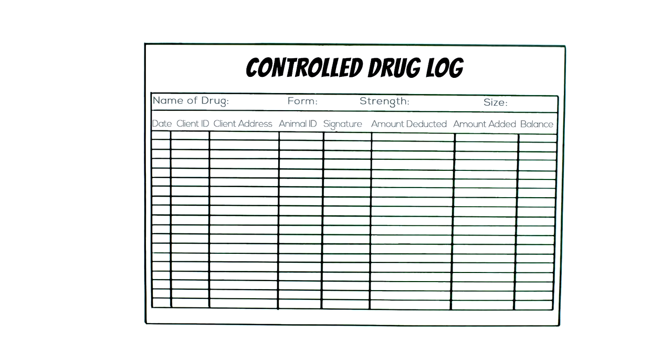Under Regulation 1093, all veterinary facilities must maintain a controlled substances register, commonly referred to as a controlled drug log. The controlled drug log is a system for recording the inventory of controlled drugs, including purchases, sales and in-facility dispensing.